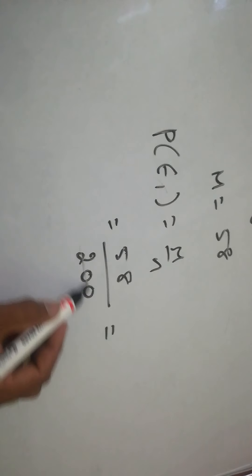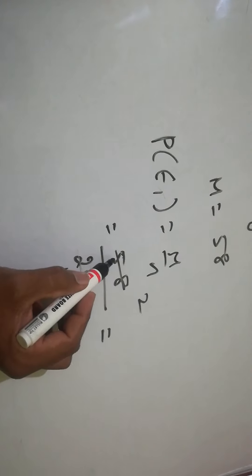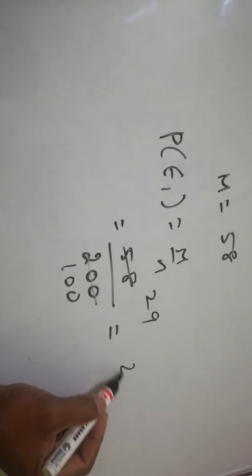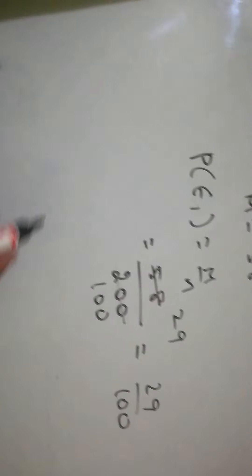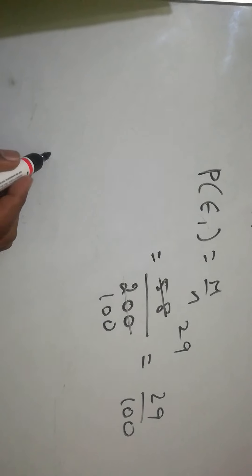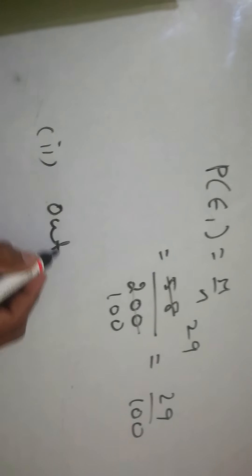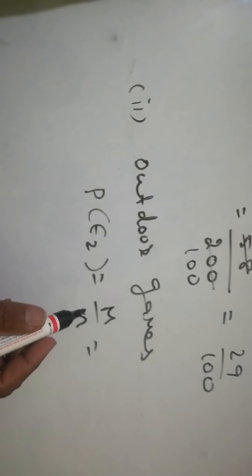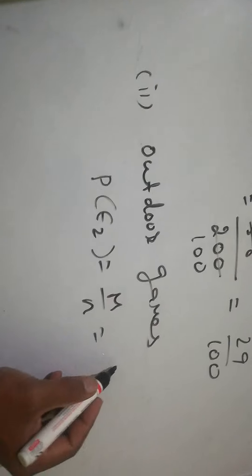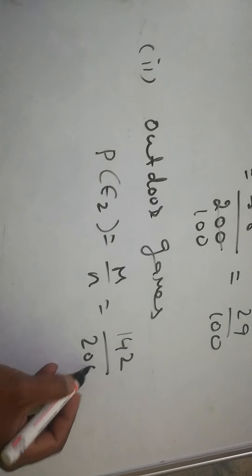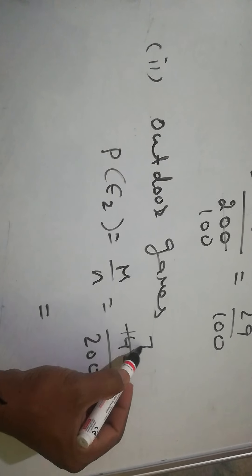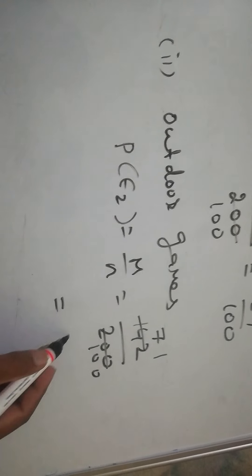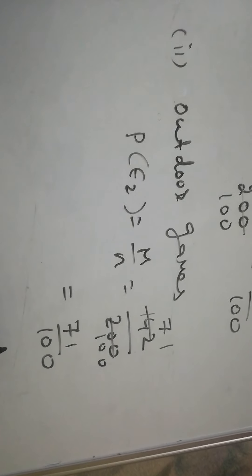Simplifying 58 by 200, cutting by 2, the answer is 29 by 100. The second question is outdoor games. M equals 142. So P of E2 equals M by N, that is 142 by 200. Cutting by 2, the answer is 71 by 100.